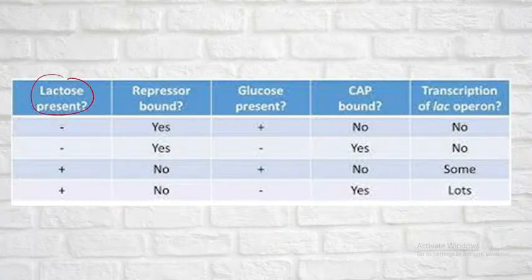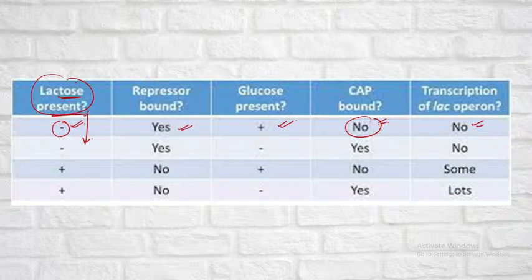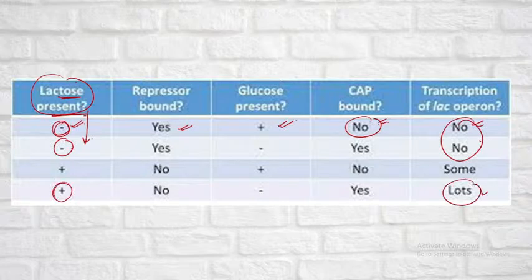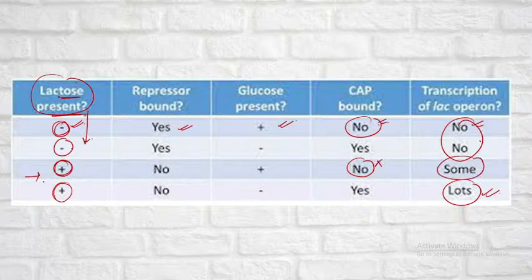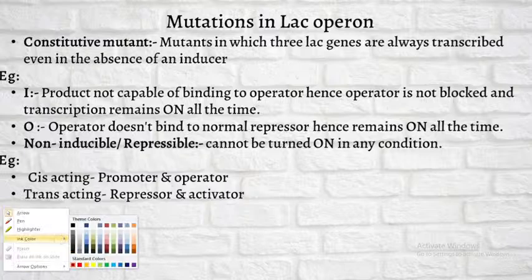Now look here. When lactose is absent, the repressor is bound. When lactose is present but CAP is not bound, the lactose genes will still be transcribed but to a lesser extent. When lactose is present and CAP is bound, transcription takes place to a maximum level. So lactose absent means transcription is not taking place; lactose present means maximum transcription. In the second case, when lactose is present but CAP is not bound, there is transcription of the lac genes but to a lesser extent. Mutations in the lac operon — I have already explained those in the previous class, so go through it.